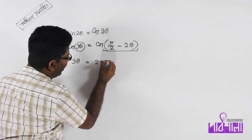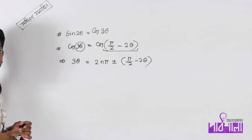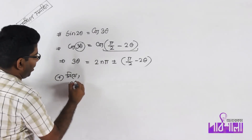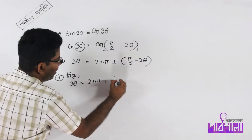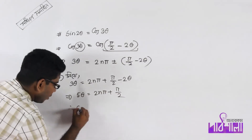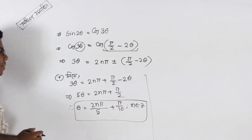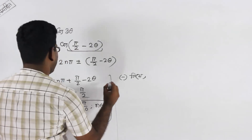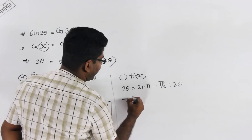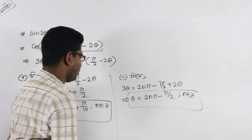General solution: 3θ equal to 2nπ plus minus (π/2 minus 2θ). Taking the plus case: 3θ = 2nπ + π/2 minus 2θ, so 5θ = 2nπ + π/2, giving θ = 2nπ/5 + π/10. Taking the minus case: 3θ = 2nπ minus π/2 plus 2θ, giving θ = 2nπ minus π/2, n ∈ Z.